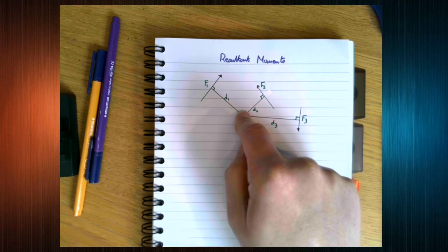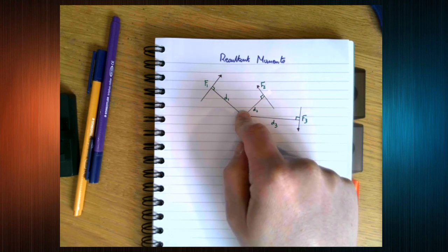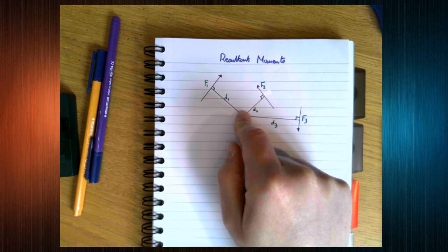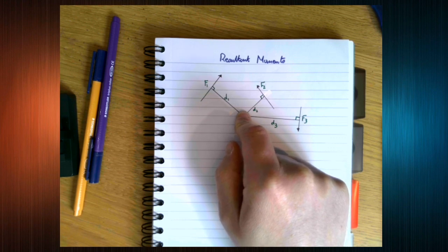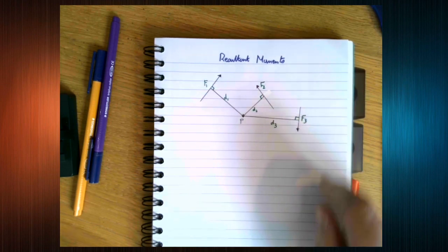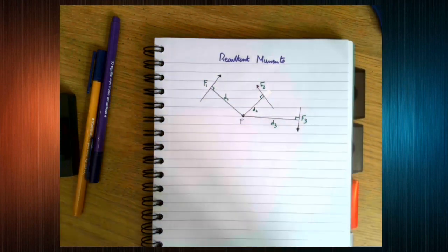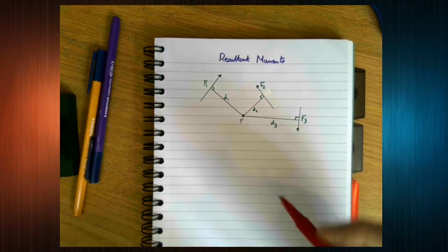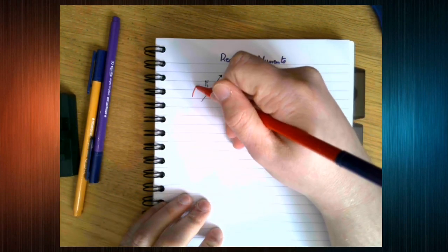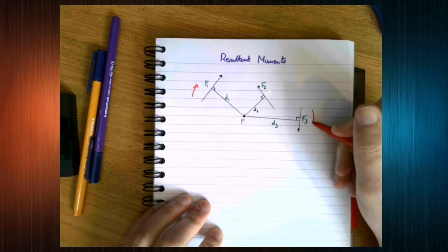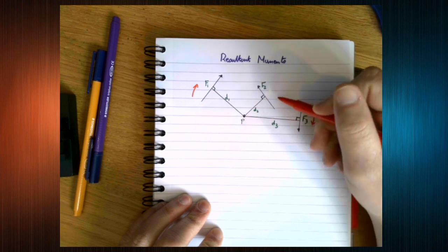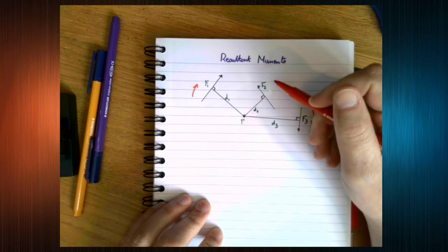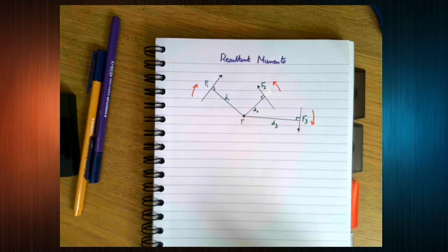Is it going to turn anti-clockwise or clockwise? Now, obviously that's dependent on many things, including how big the forces are, but we can see that we have two forces that are going to make the lamina turn this way, and one force here which is going to make it turn in the opposite direction.